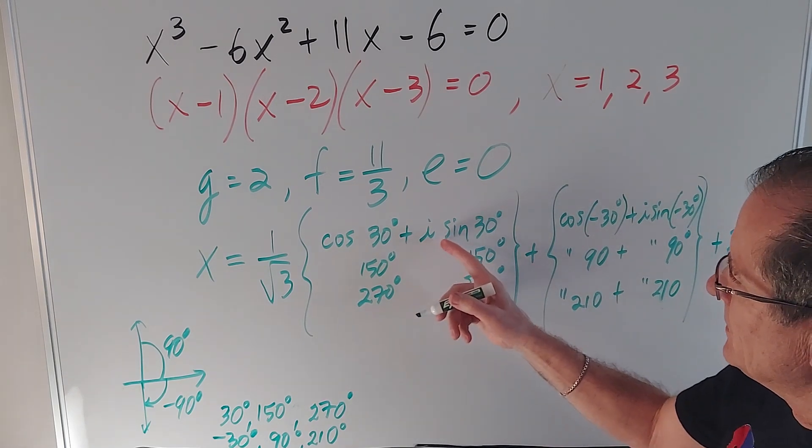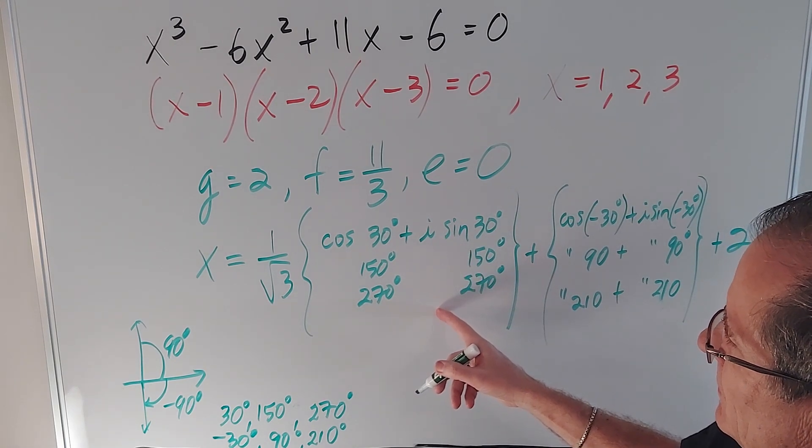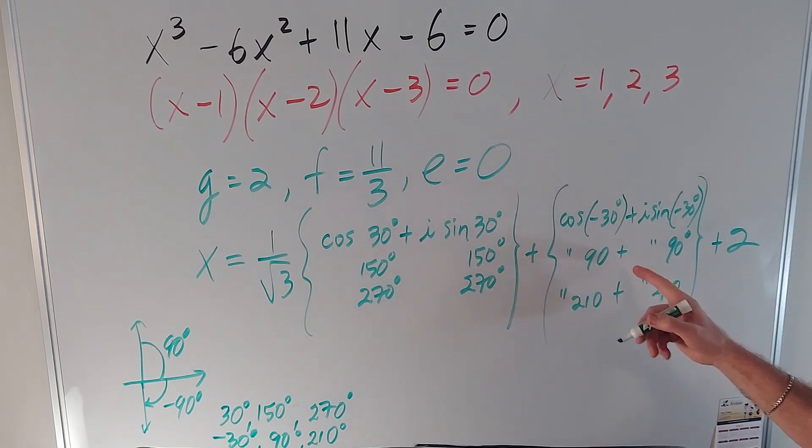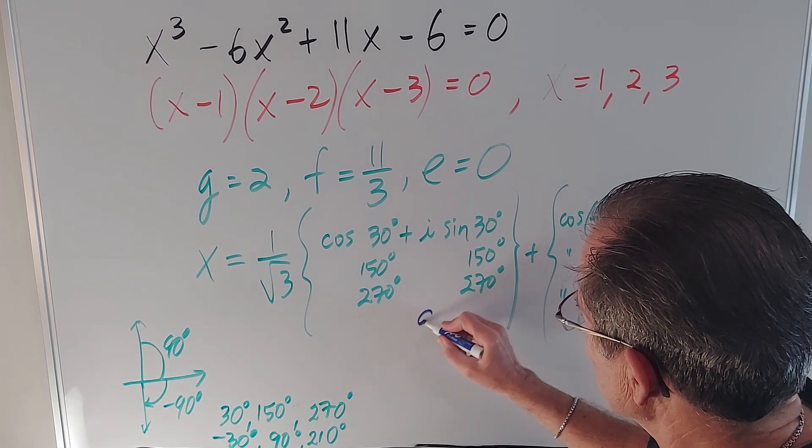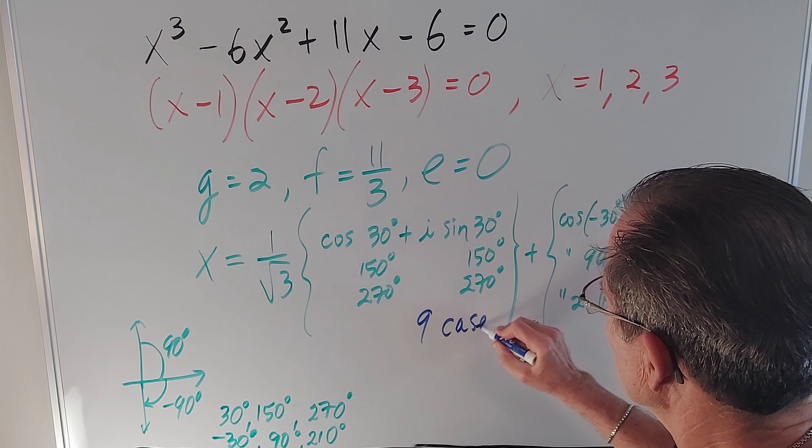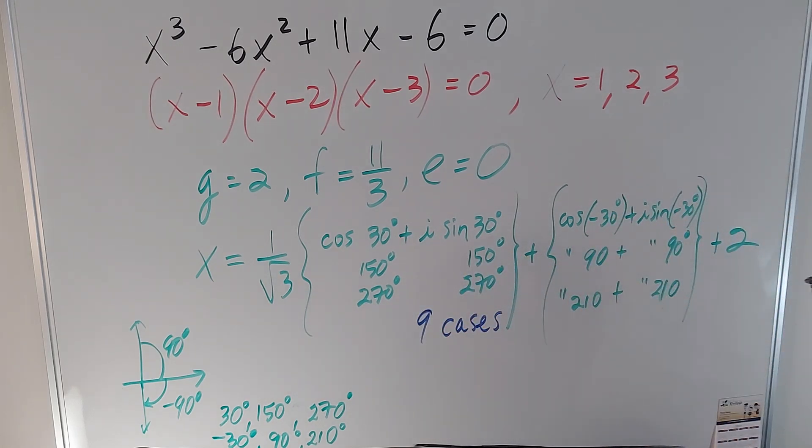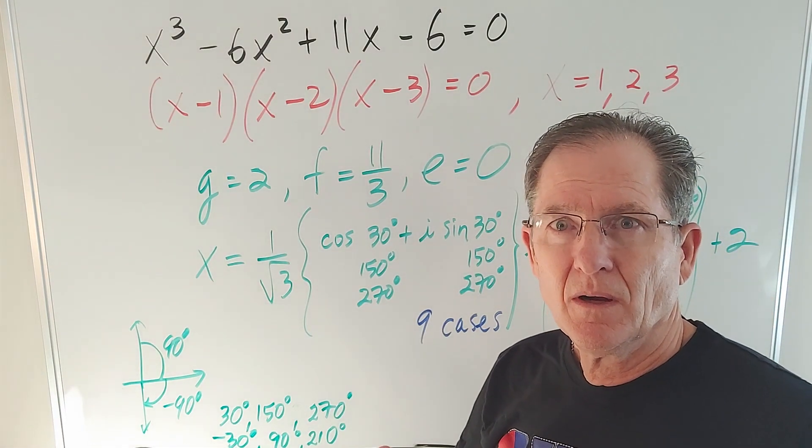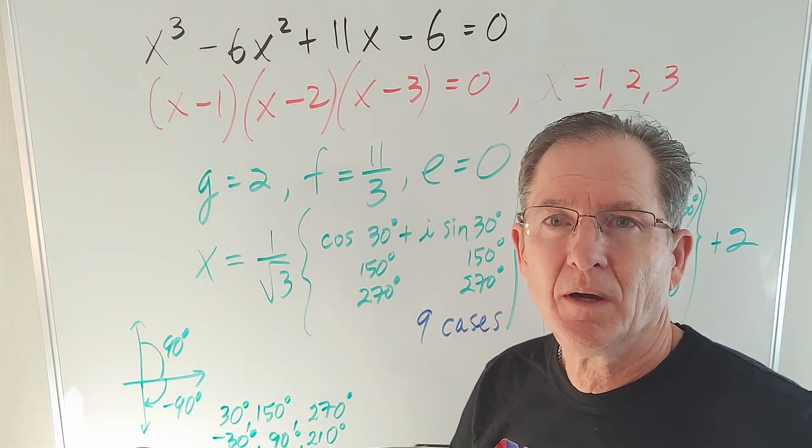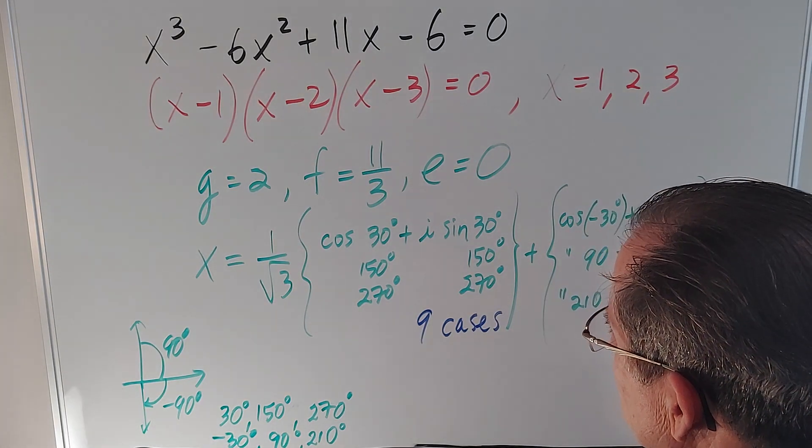So there's three answers for the cubed root of the first term, three answers for the cubed root of the second term. And altogether, that gives me nine cases. The first one here can be matched up with either one of those and so on. So of those nine, which three do we want? Well, let's find out.